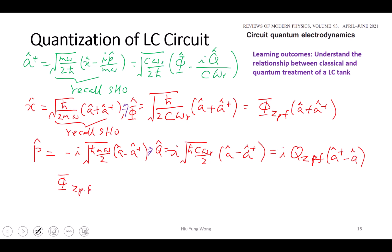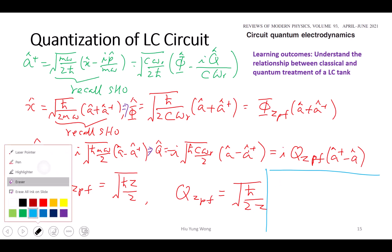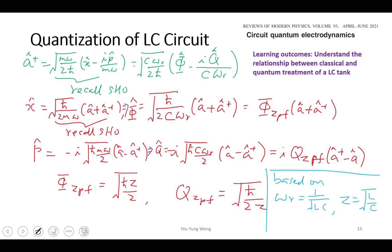And in summary we have phi zero point fluctuation equals to square root h bar Z over 2, and then Q zero point fluctuation equal to square root h bar over 2Z. I skipped the math but all you need to do just compare. Based on omega R equal to 1 over square root LC, impedance equal to square root L over C for this particular circuit.